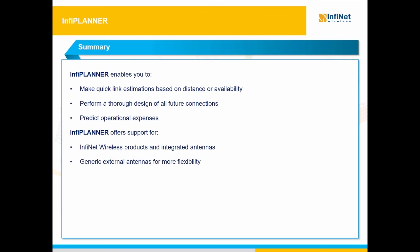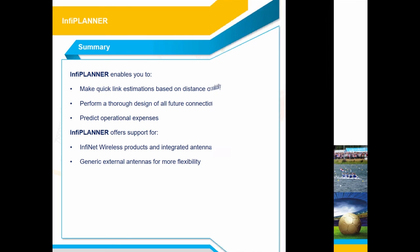As you can see, the new InfoPlanner proves to be a useful tool for every customer, whether you only need a quick link estimation based on distance or a more thorough design of all future connections with exact unit locations. InfoPlanner is the right tool for the job — it also enables you to predict operational expenses according to the needs of your wireless network. Moreover, InfoPlanner supports not only integrated antennas for Infinet Wireless products, but also generic external antennas in order to add more flexibility to your project planning. Enjoy using the InfoPlanner tool and Infinet Wireless products.